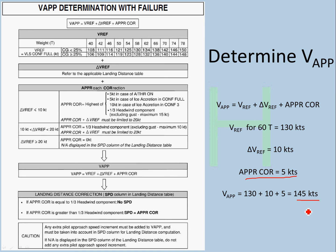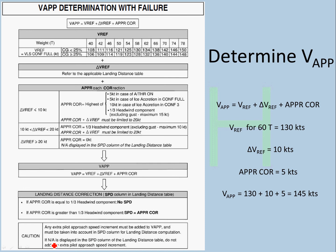V approach = 130 + 10 + 5 = 145 knots. For the speed column in the landing distance table: if approach correction equals one-third of headwind component, no speed correction is needed. Here approach correction is 5 knots and one-third headwind is 2 knots, so speed equals approach correction — 5 knots must be catered for in the speed column. Caution: any extra pilot approach speed increment must be added to V approach and accounted for in the speed column for landing distance computation, as landing distance increases with any speed increment.